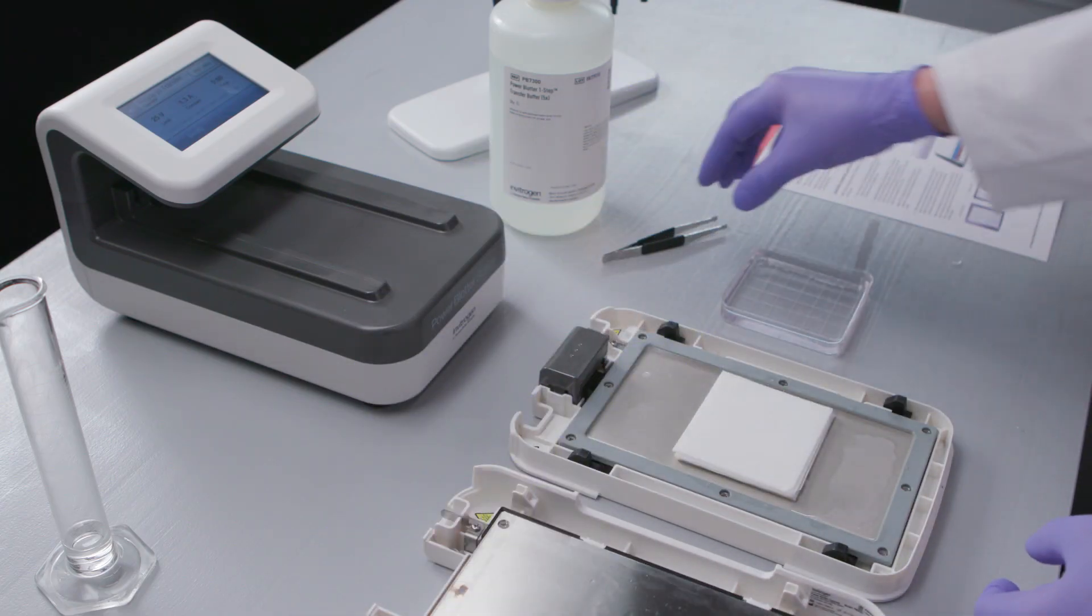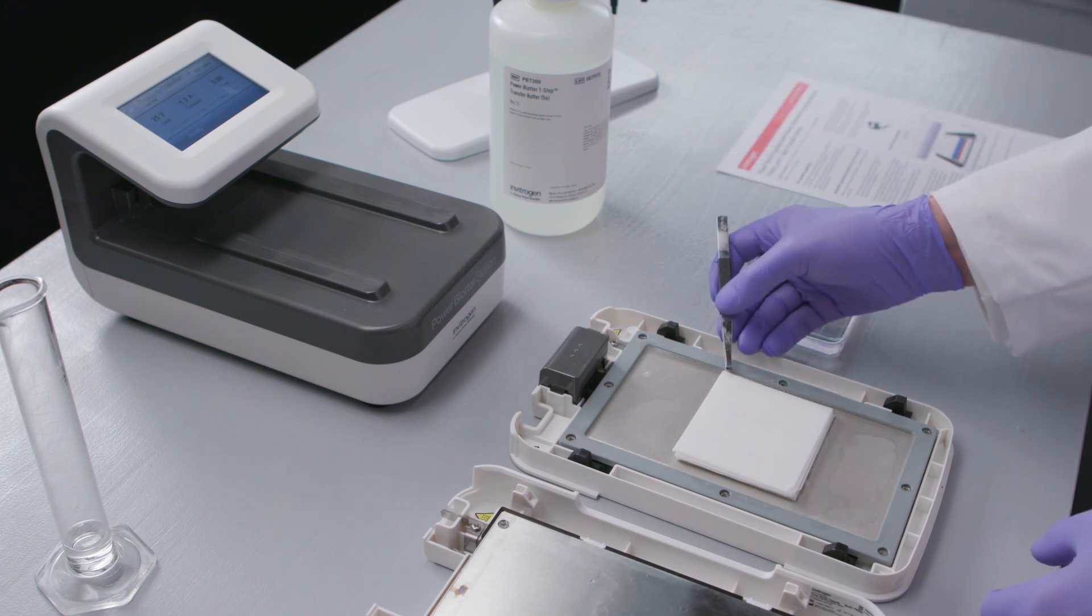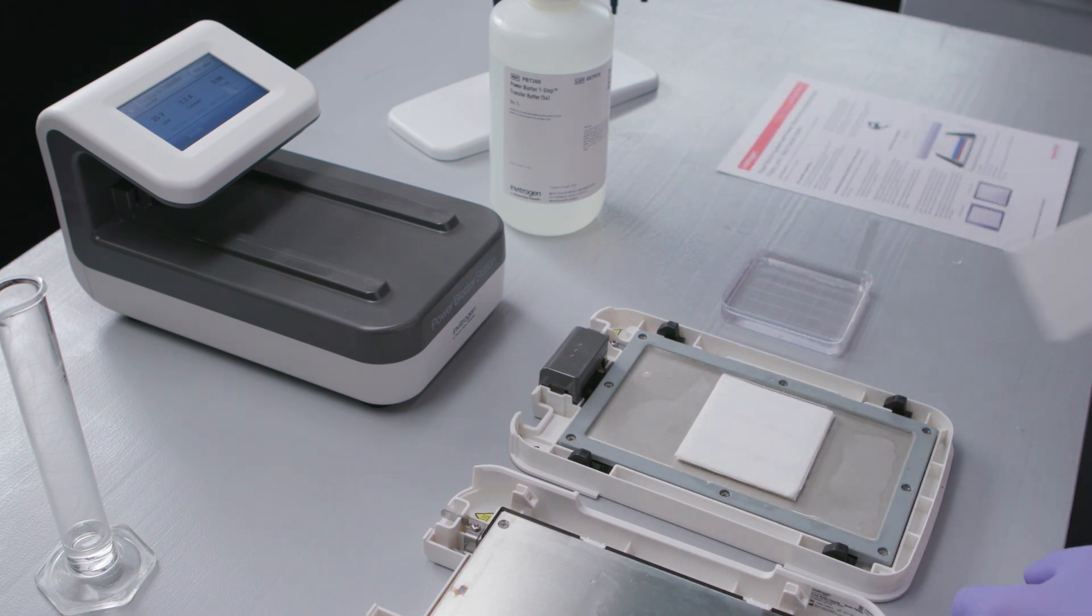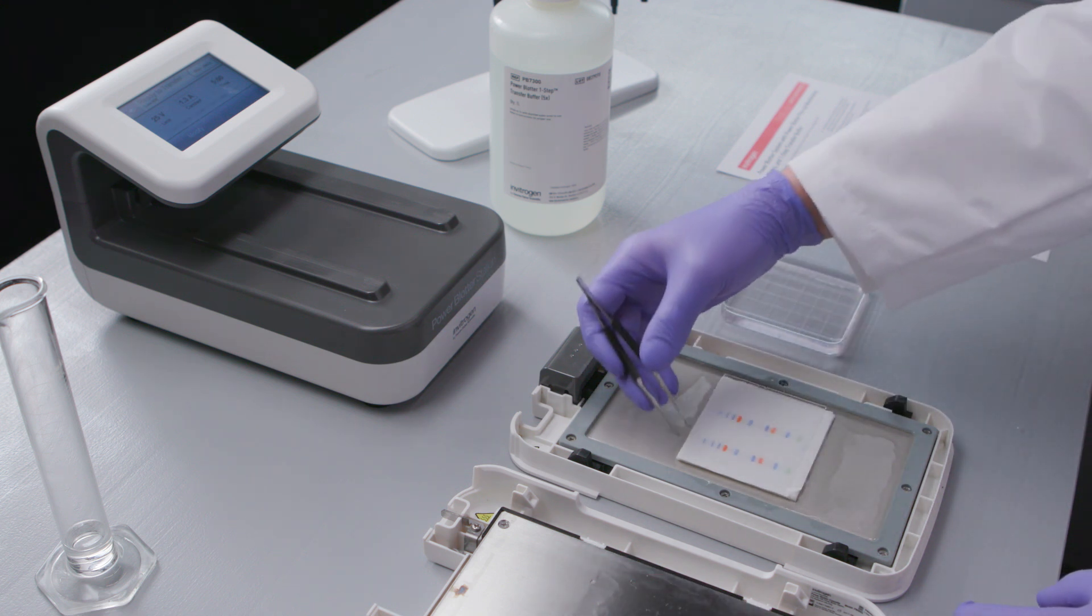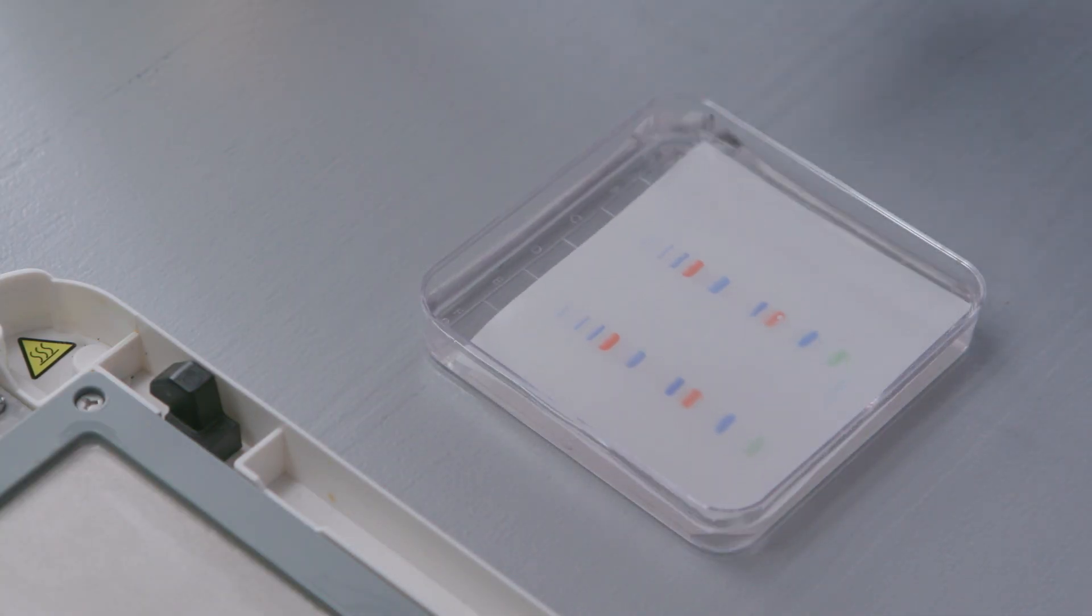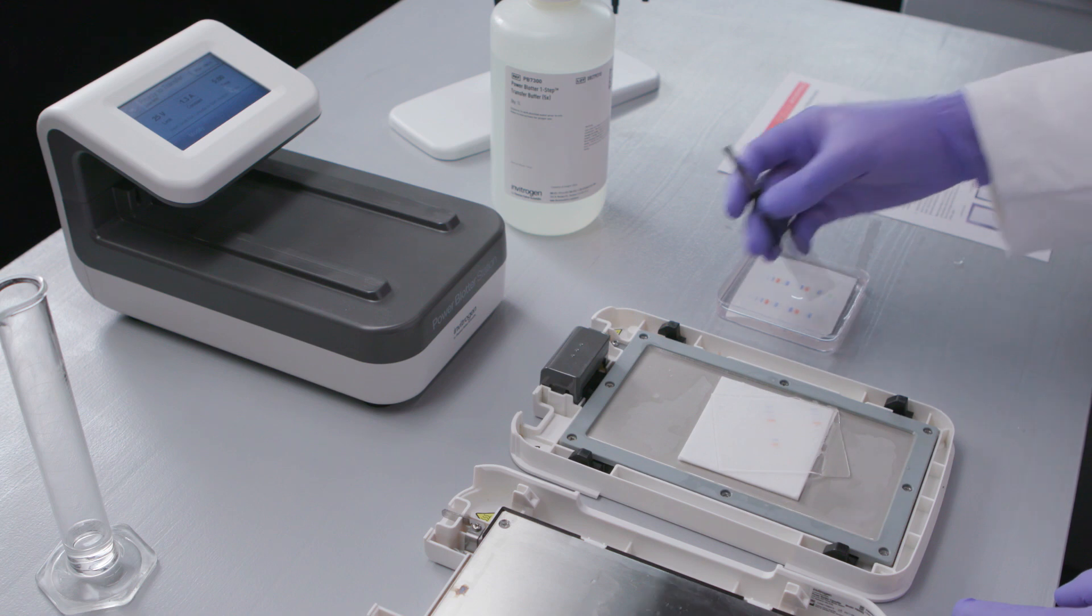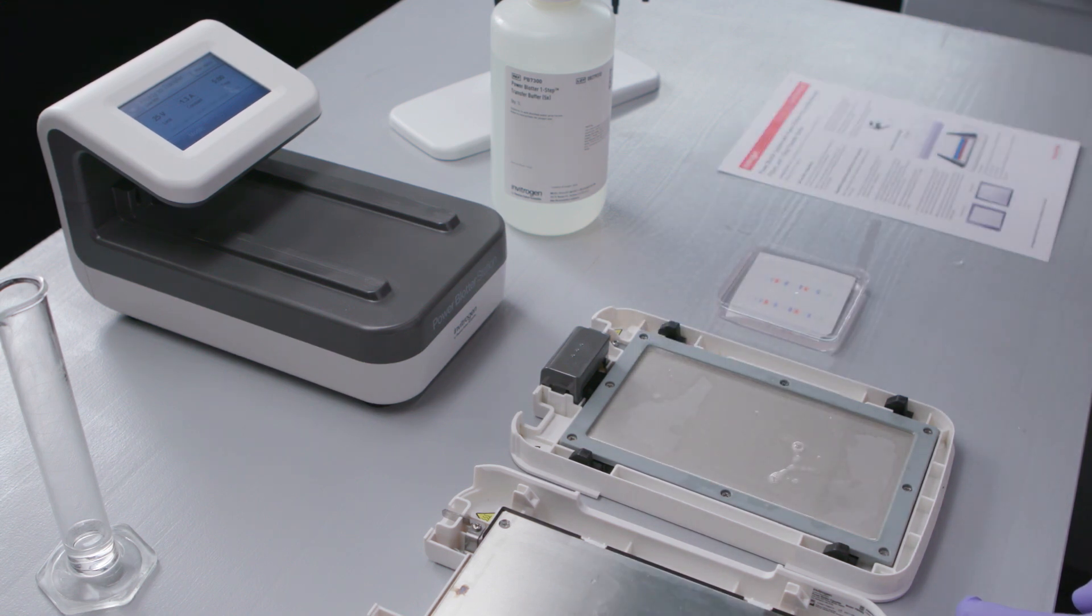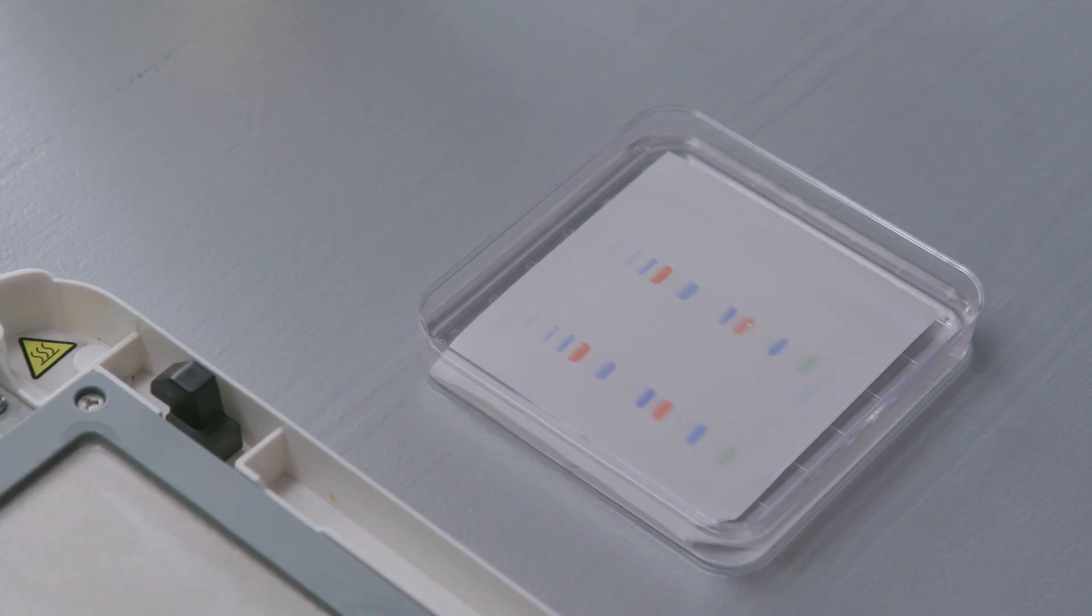Carefully remove and discard the top two filter papers and the gel. Use forceps to remove the transfer membrane. Discard the two bottom filter papers. Now your membrane is ready to be blocked and probed for your specific proteins.